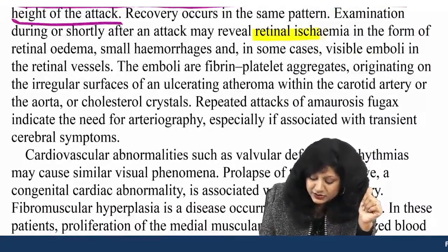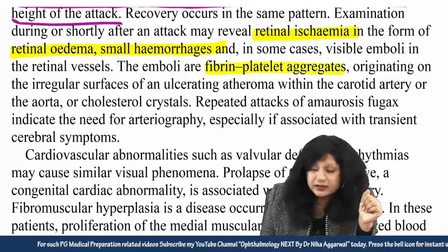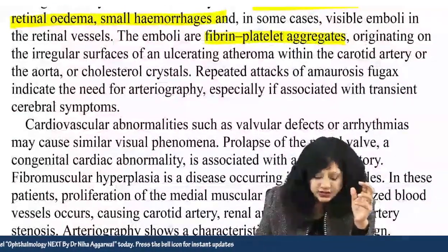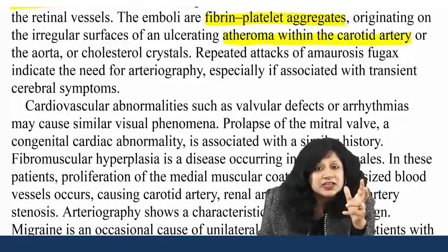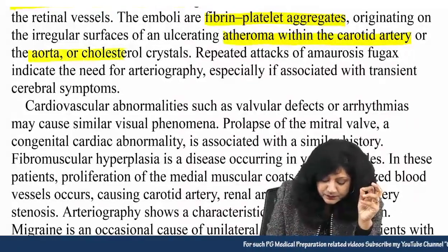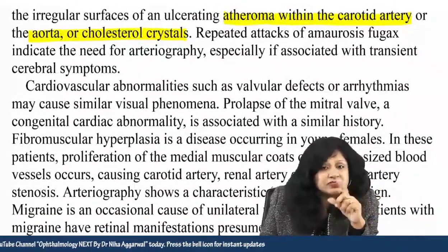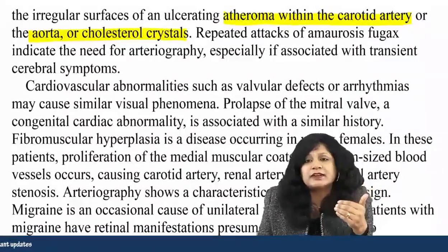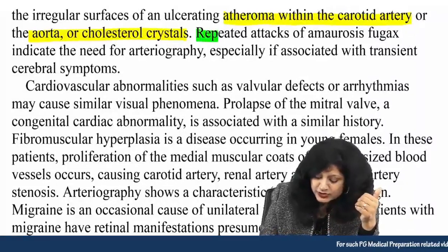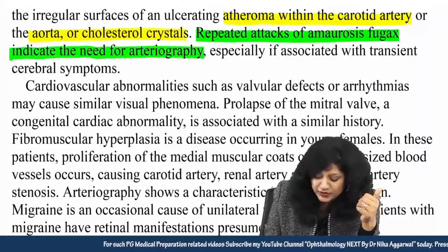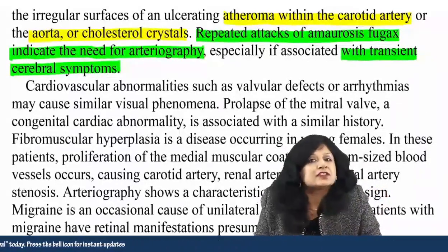Examination during or shortly after an attack may show retinal ischemia in the form of retinal edema, hemorrhages, and emboli — fibrin-platelet aggregations originating from surfaces of atheromas within the carotid artery. So you can have carotid artery plaques, Hollenhorst plaques, atheromas, or cholesterol crystals over the aorta. Repeated episodes of amaurosis fugax indicate the need for arteriography, especially if there are transient cerebral symptoms — this is the main thing that could be asked in the question.